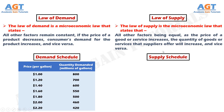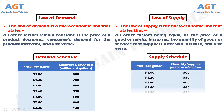A Supply Schedule is a table that shows a range of prices for a good or service and the quantity supplied at each price. This is a supply schedule — this table shows the price for each gallon of gasoline and the change of supply with change of price of each gallon.